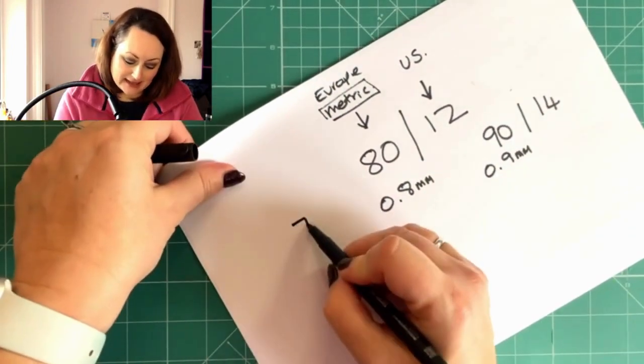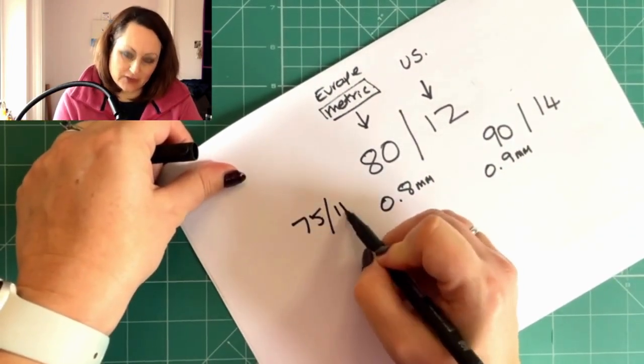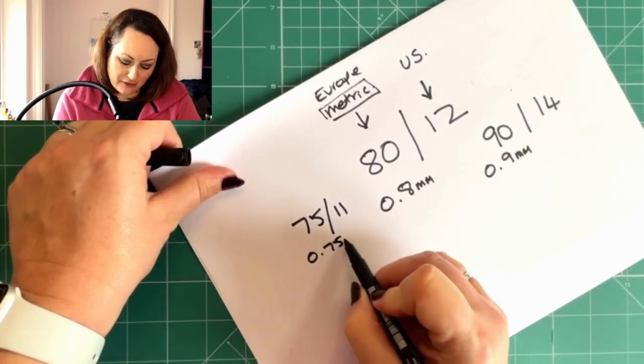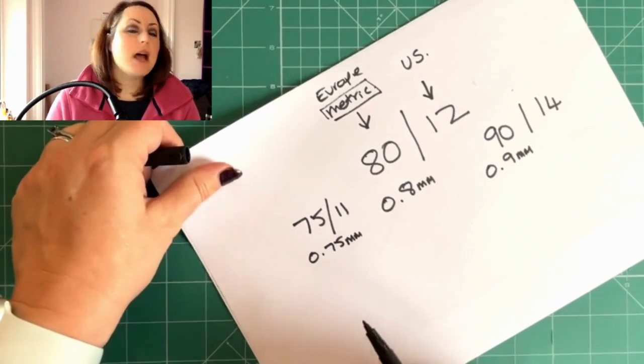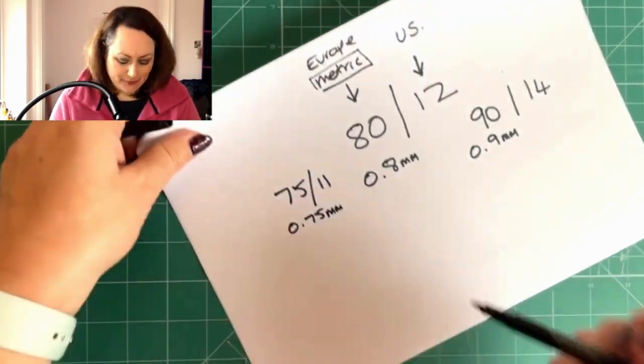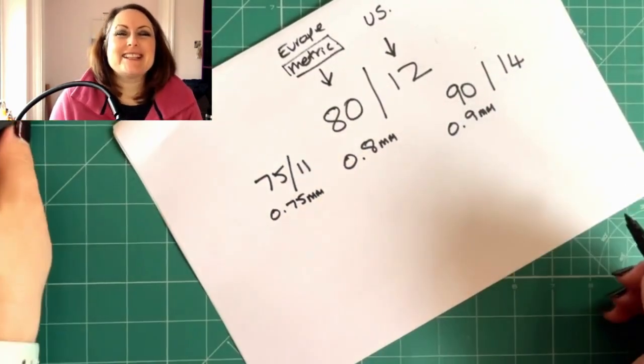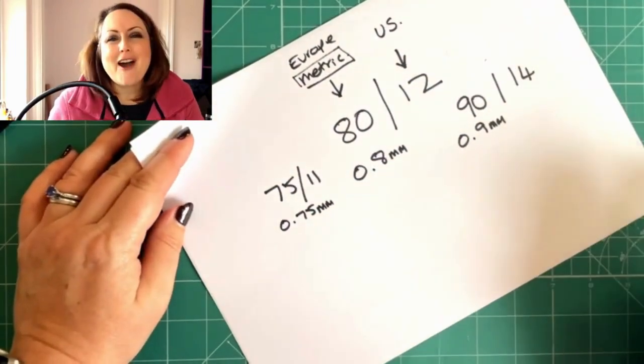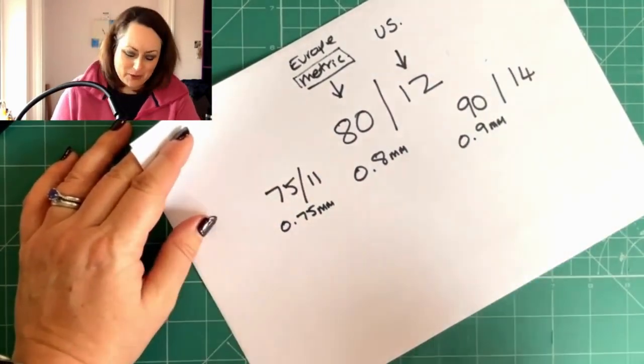And then if we had a 75 needle, which would be slash 11, we would have 0.75 millimeters. So you can see how that works, but where does it refer to? So this, this is where my drawing is going to fall down a hole, but you're going to be fine. You're going to be with me. You're going to get what I'm talking about.